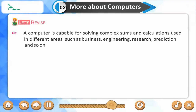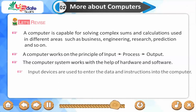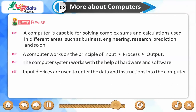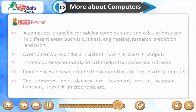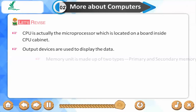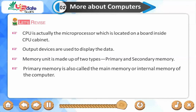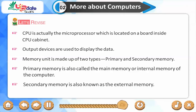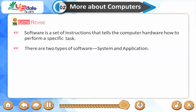Let's revise. A computer is capable of solving complex calculations used in different areas such as business, engineering, research, and prediction. A computer works on the principle of input, process, and output. The computer system works with the help of hardware and software. Input devices enter data into the computer; common ones include keyboard, mouse, scanner, light pen, joystick, and microphone. CPU is the microprocessor located inside the CPU cabinet. Output devices display data. Memory unit has two types: primary memory (main/internal memory) and secondary memory (external memory). Software is a set of instructions that tells hardware how to perform a task, and there are two types: system software and application software.